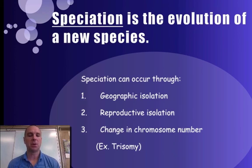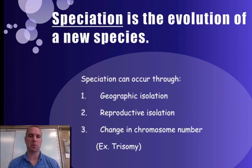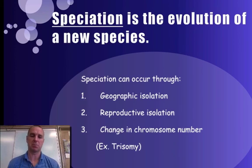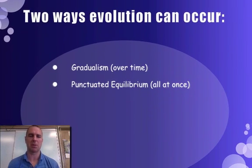Reproductive isolation is another way species separate. One way is that an organism's sperm might be unable to penetrate the egg of another organism. Or they might have different reproductive structures — think about flowers shaped to be pollinated by bees versus hummingbirds. Chromosome number is another factor, usually caused by a mutation. Trisomy is the main example, especially Down syndrome.